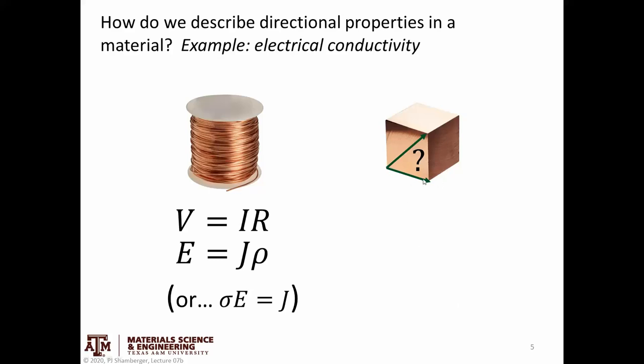does it matter which direction I apply that electric field in? Would I get the same resistivity if I apply electric field horizontally or across the body diagonal? And if it's a random polycrystalline solid, this is an isotropic material. And so you would expect that the resistivity doesn't really matter what orientation I measured it.